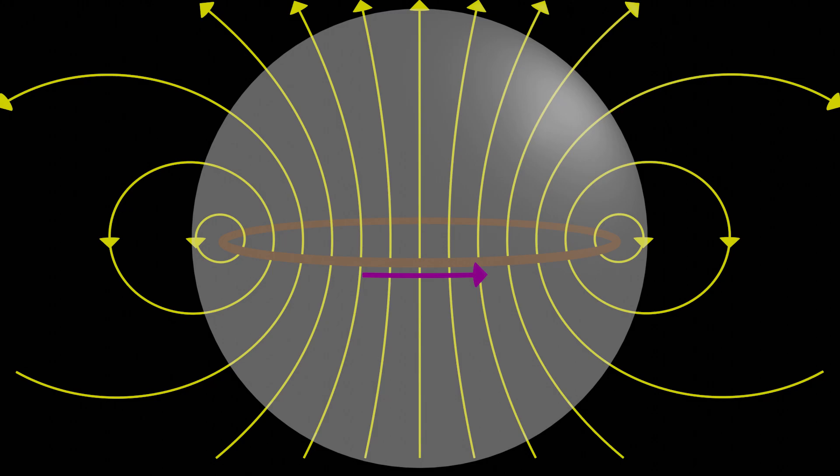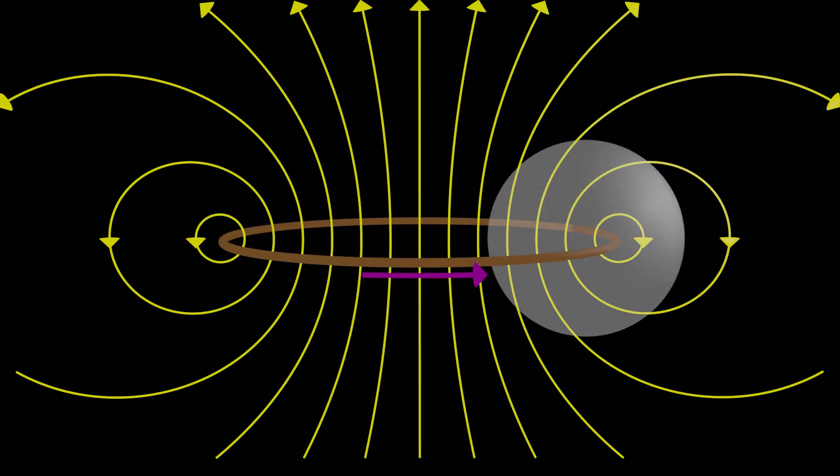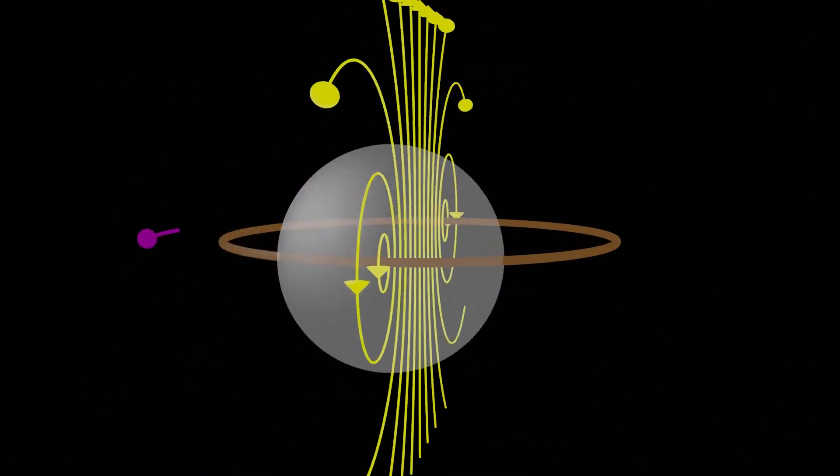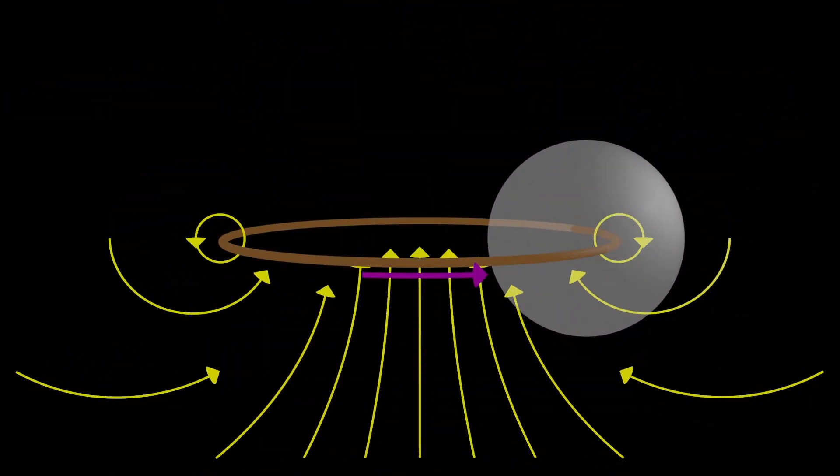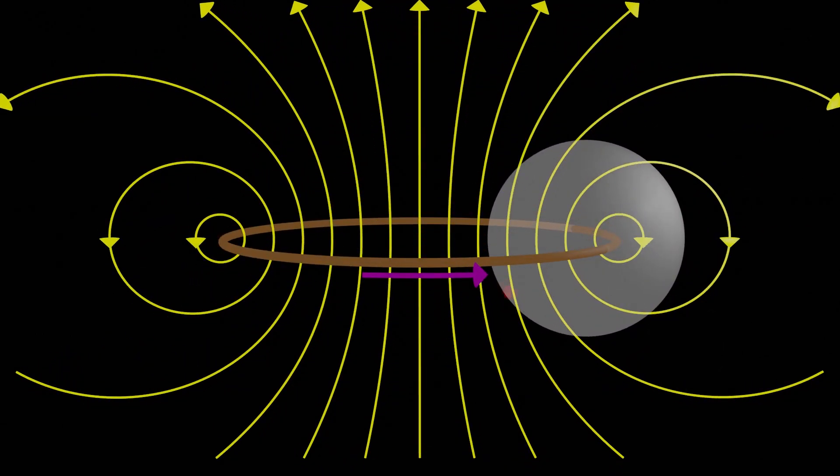What if we only cover some of the current loop with our surface? Does that help? Turns out, it actually doesn't change anything. We still have no net magnetic flux. For every field line that enters the surface, it leaves somewhere else, and every field line that leaves the surface enters at some point, so there's still no net magnetic flux through the surface.